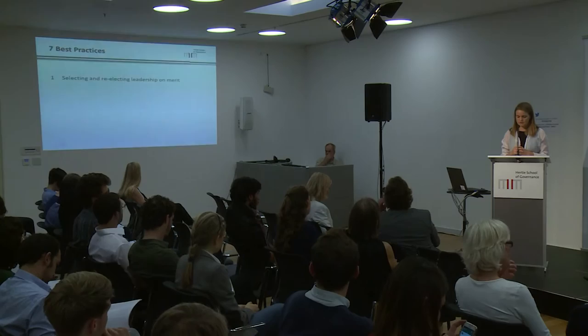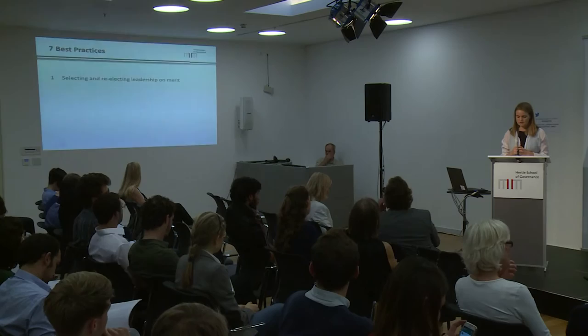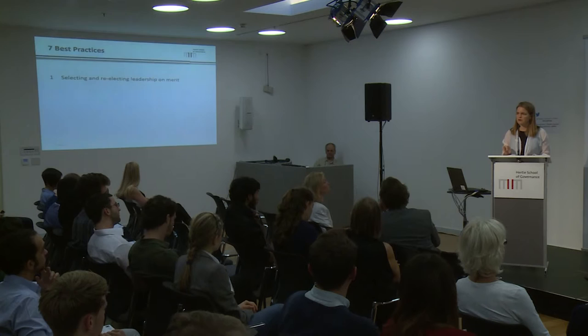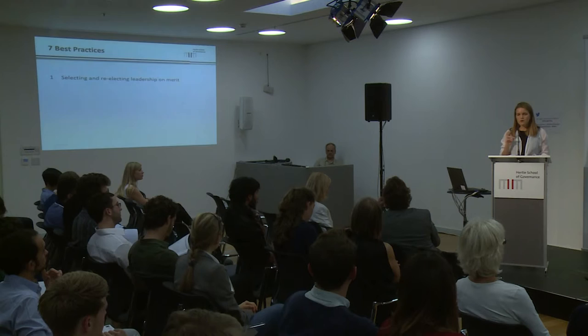The seven best practices we identified are things that at least one organisation is currently doing — these are not radical pie-in-the-sky reforms. The first is selecting and re-electing leadership on merit. Here we looked for clear terms of reference for the leadership position, involvement of all member states in the process, and a time-bound, published, and exhaustive process for leadership selection. This is very topical because it's exactly what the UN is currently discussing about the selection process for the Secretary General.